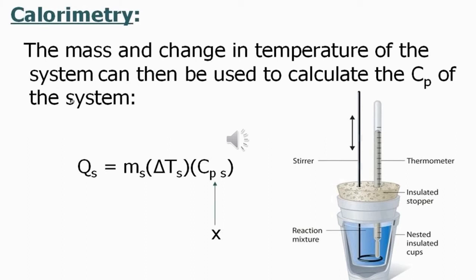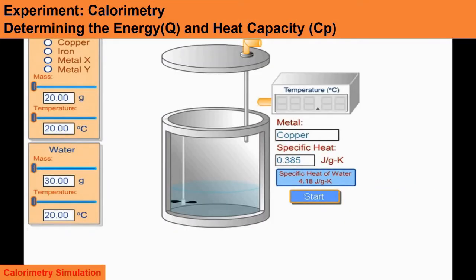Now we're going to look at some examples of the calorimeter used in the laboratory. This is an example of a calorimeter that is usually found and used in the laboratory. At the upper left are the substances, and these substances have different heat capacities or specific heats, meaning different substances require more energy to raise to a certain temperature. For example, copper may require less energy to raise to a certain temperature than silver with the same mass. In the simulation, our substance is the system and the water is the surrounding, and we're going to determine the heat capacity of a certain substance.